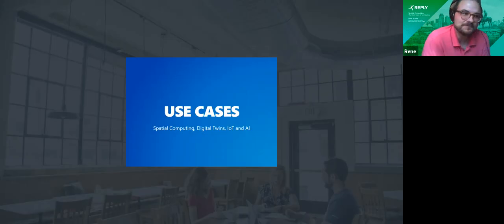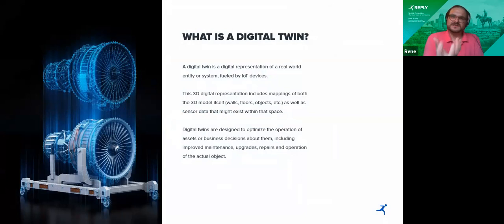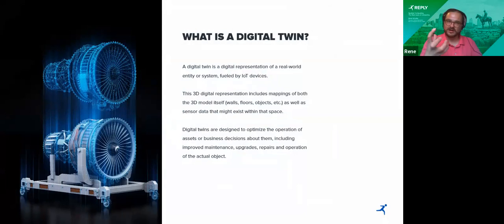Let's talk about use cases, starting with digital twins. A digital twin is a digital replica of a physical entity — a real-world entity. That could be your organization hierarchy, but typically we're talking about physical objects like a building, a facility, a factory, or an engine. On the screenshot you can see this is a jet engine — we have this real object and a 3D model of it. But the digital twin is not just a 3D model.